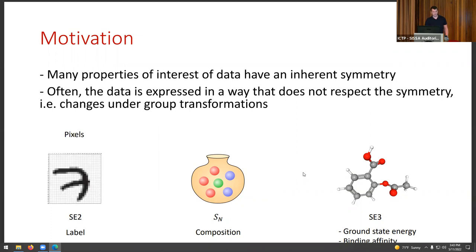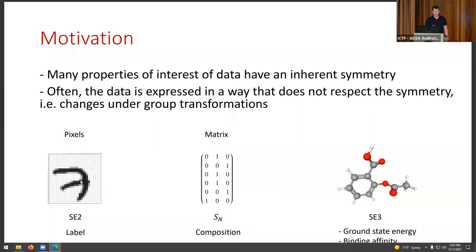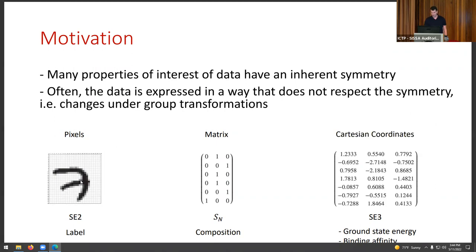The problem is that data is often expressed in a way that does not respect the symmetry. For example, images are often represented as matrices of pixels, and if we translate or rotate them the pixel values change. Sets are represented by matrices where different rows correspond to different elements, and if we permute elements the matrix changes. Similarly, representing molecular conformations by Cartesian coordinates of atom centers also changes under rotations and translations.